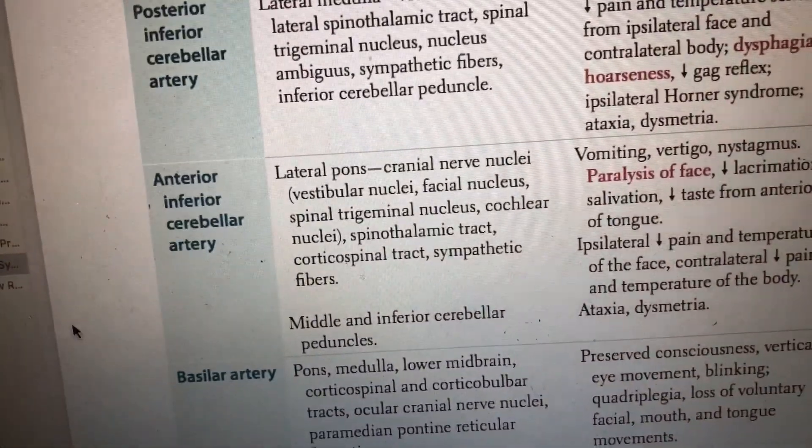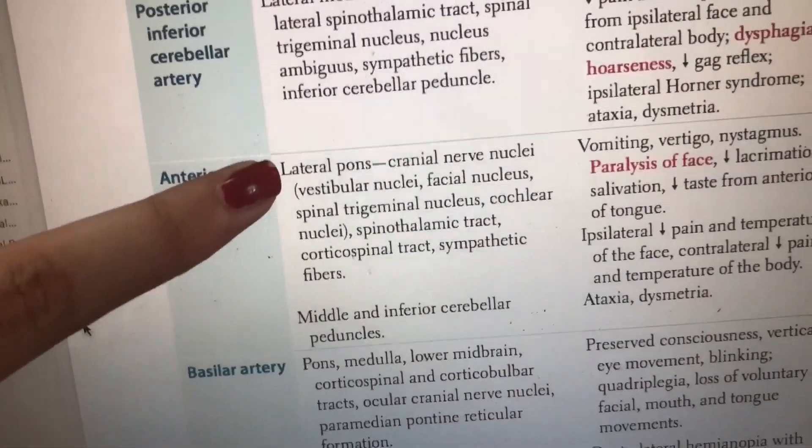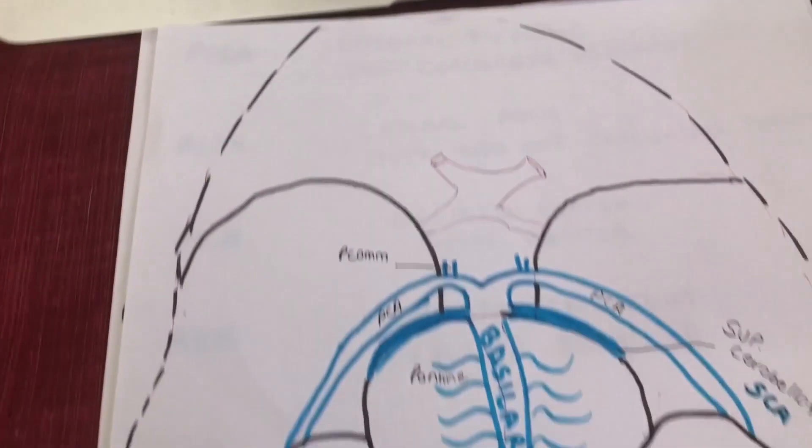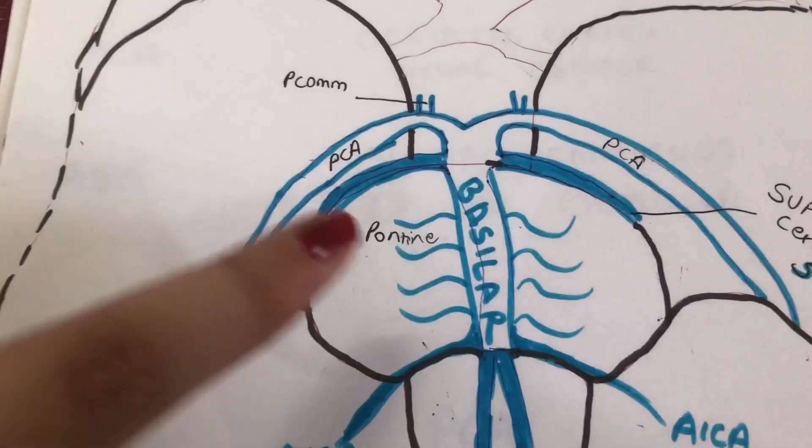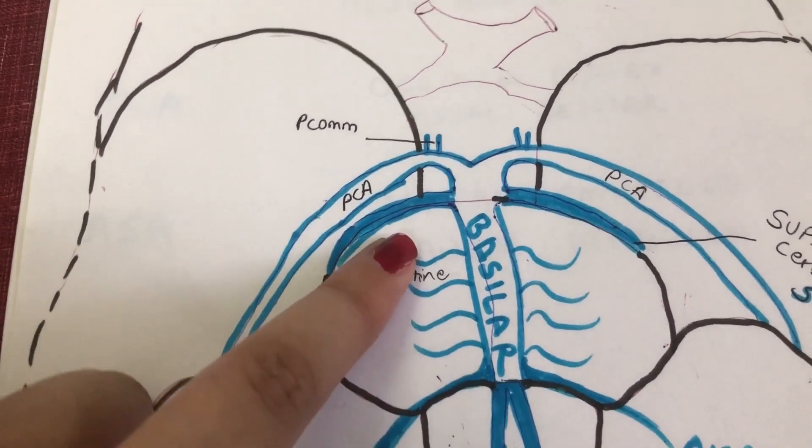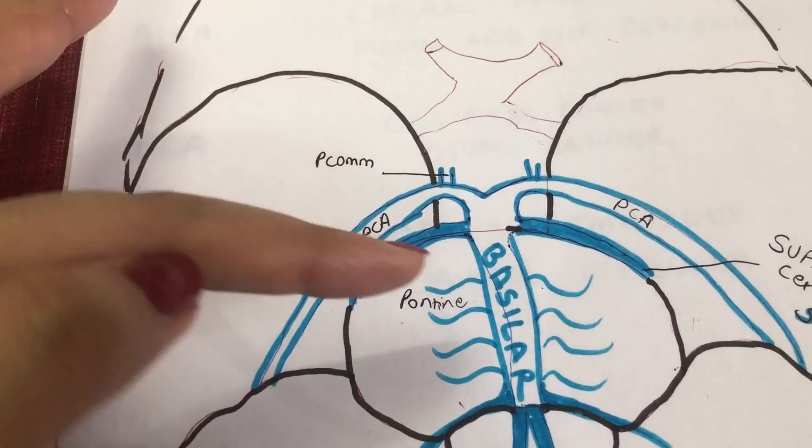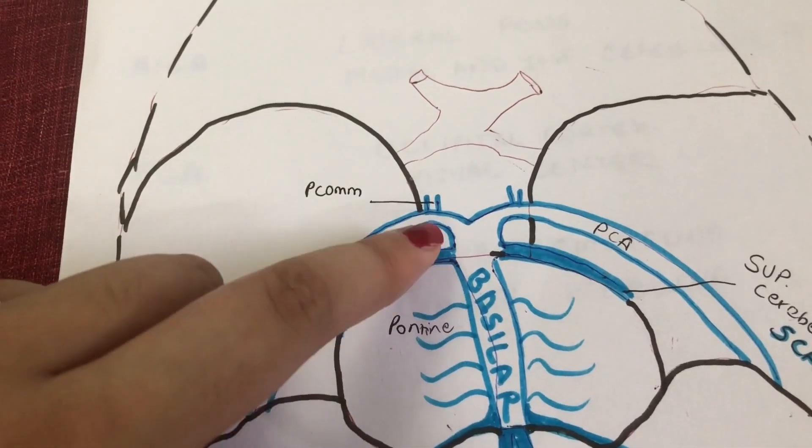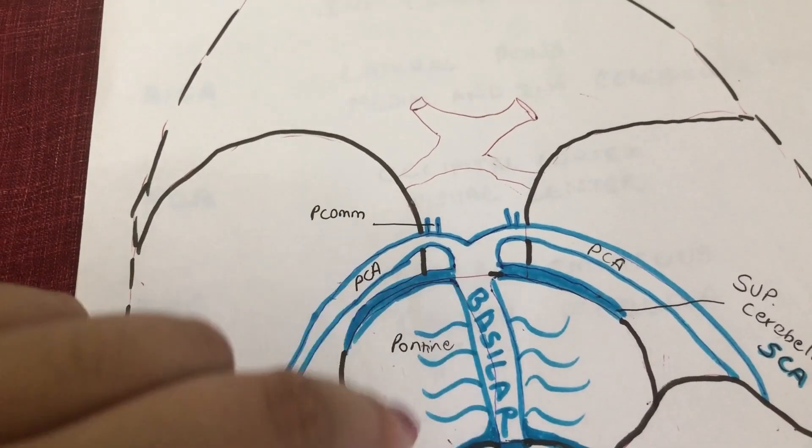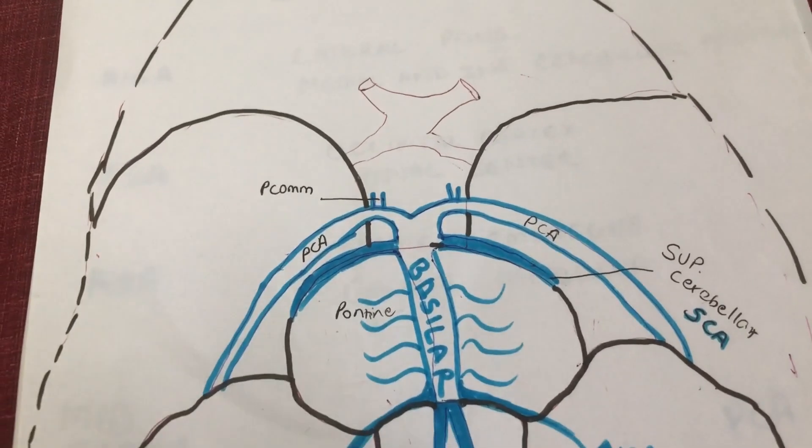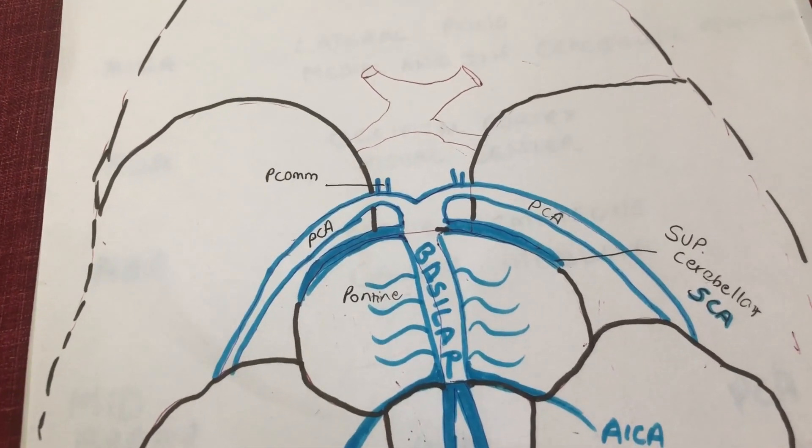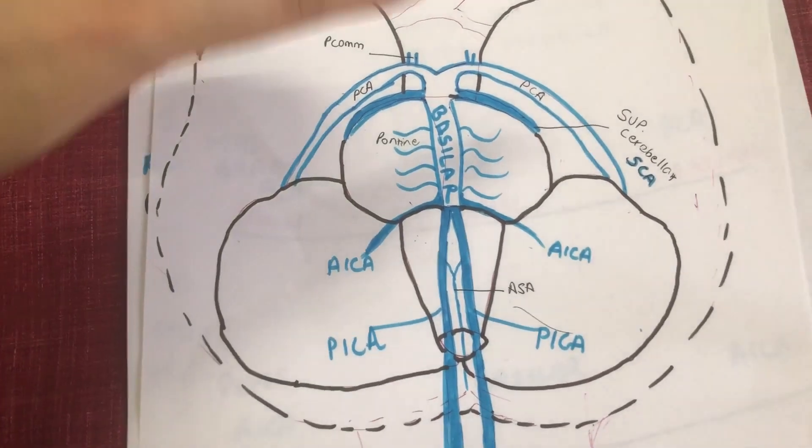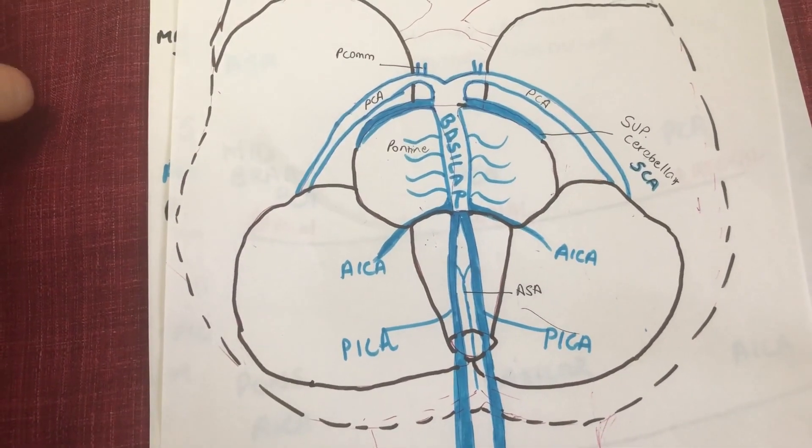A lesion in AICA should affect the lateral pons and the middle and inferior cerebellar peduncles. Now if you look at this basilar artery, it's been going upwards in the pons and it's given little pontine arteries right here. At the junction of the midbrain and the pons is where it gives out its third main cerebellar artery.